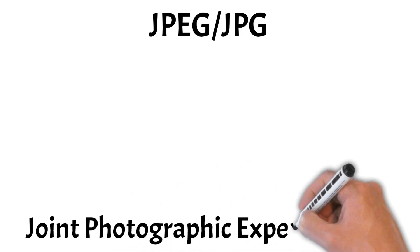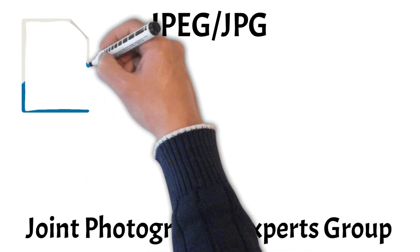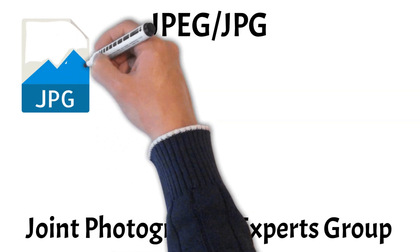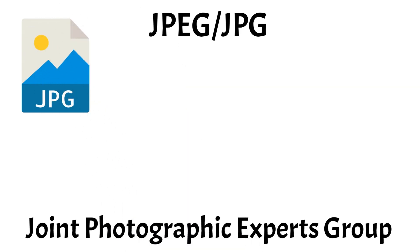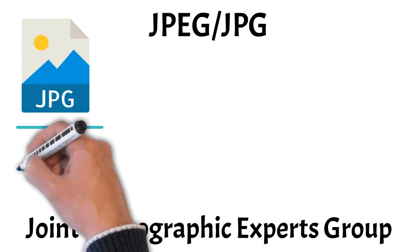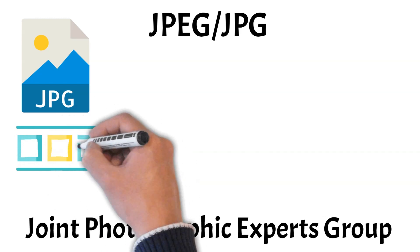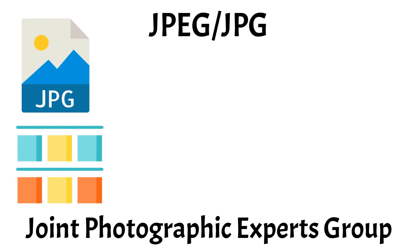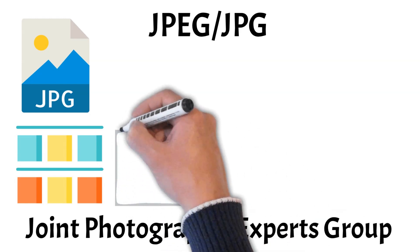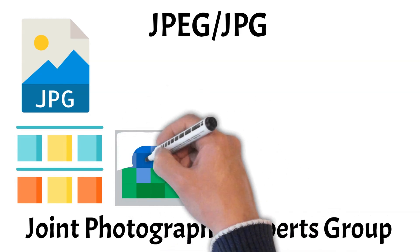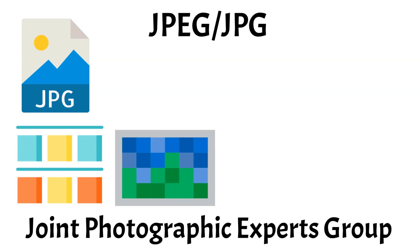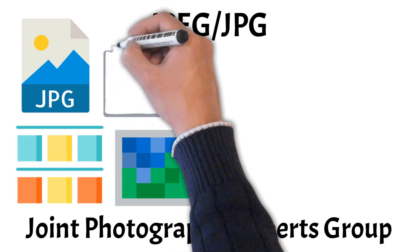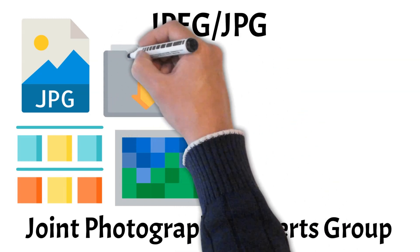First, we have JPEG. JPEG, or Joint Photographic Experts Group, is a raster image format and one of the most widely used for digital photos and web images. As a raster format, it represents images as a grid of individual pixels, each with its own color and position. It uses lossy compression, meaning it reduces file size by discarding some image data, which can slightly lower quality, especially after multiple saves.